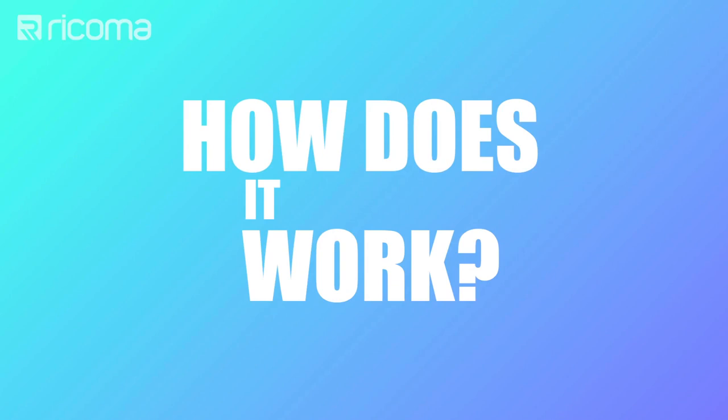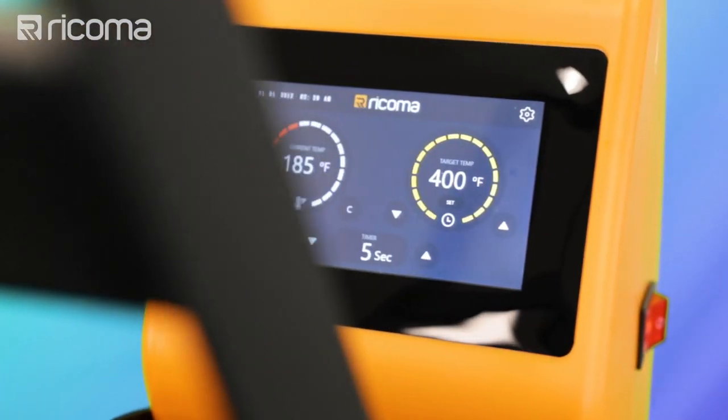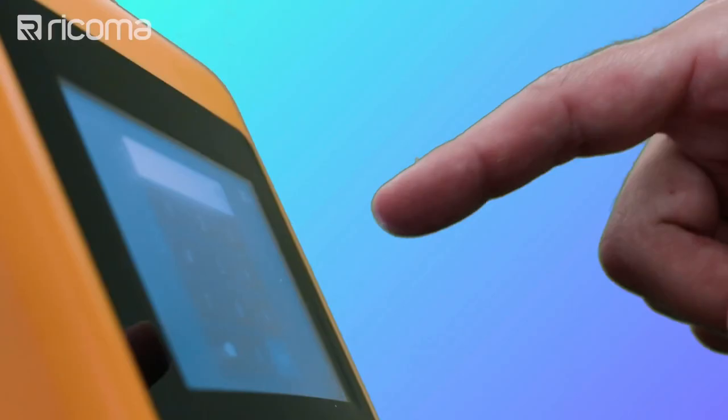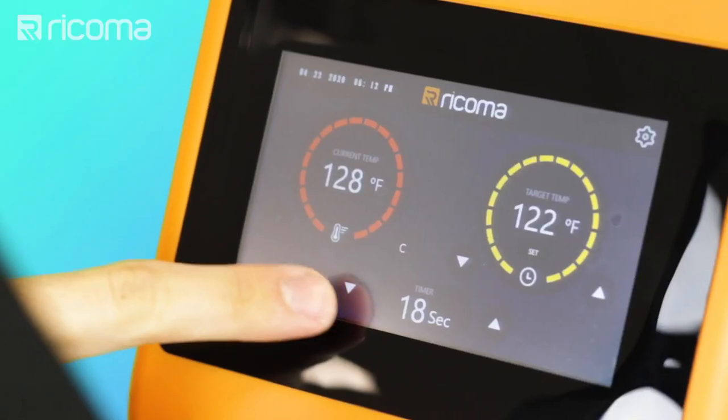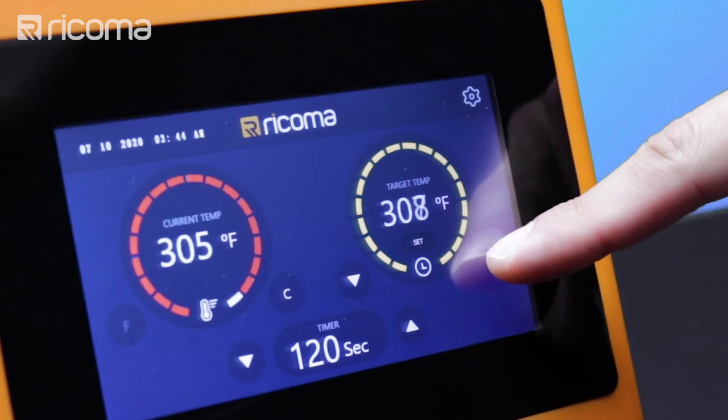How does the plate heat press work? The plate heat press has a built-in digital touchscreen that gives you full control over the machine's functions. To get started on a job, simply set the timer and the correct temperature on the machine.